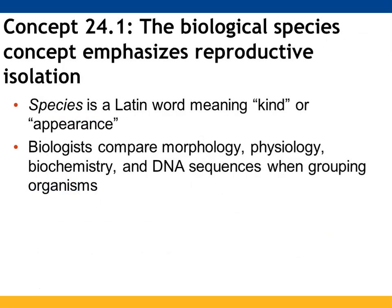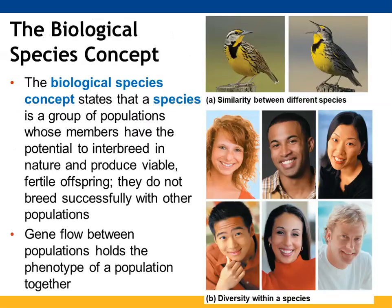There are lots of ways that species can be defined, but the biological species concept focuses on reproductive isolation. Organisms can also be grouped based on morphology, physiology, biochemistry, as well as their nucleic acid sequences. According to the biological species concept, a species is a group of populations whose members have the ability to interbreed and produce offspring that are living and capable of interbreeding. They are not able to successfully breed with other populations. Gene flow within populations is what holds those phenotypes together.